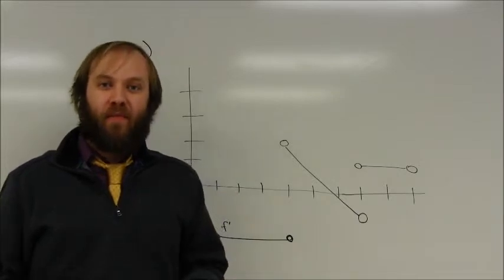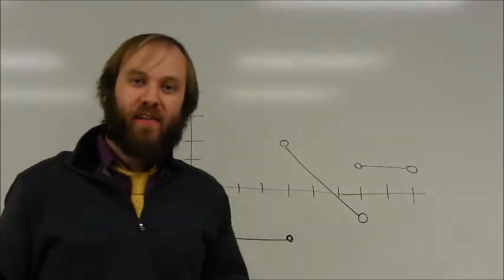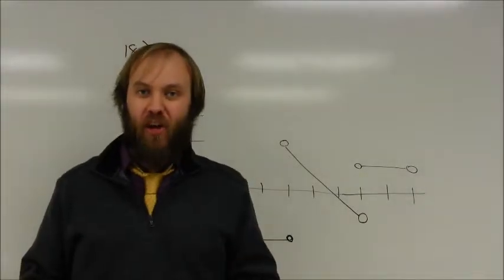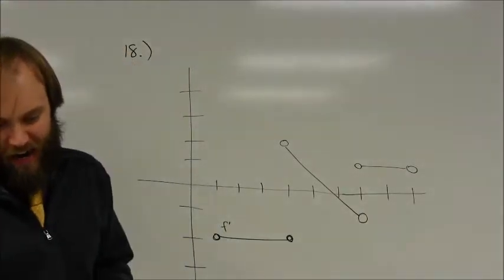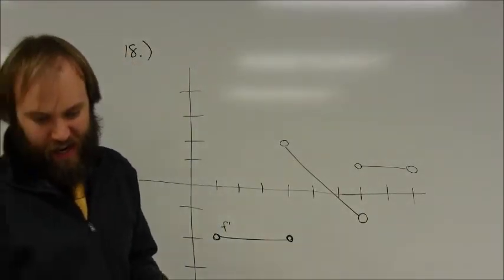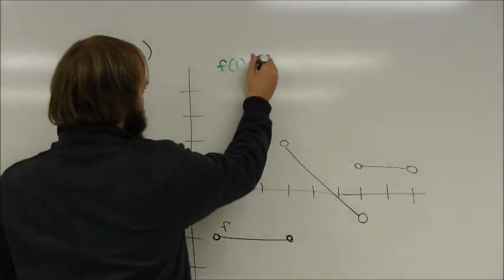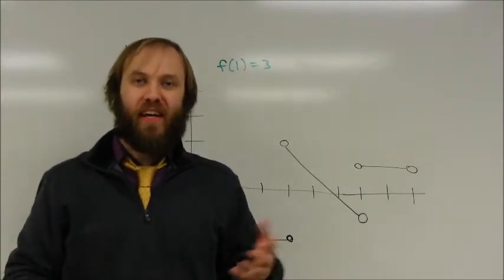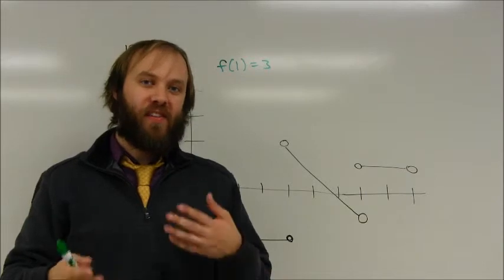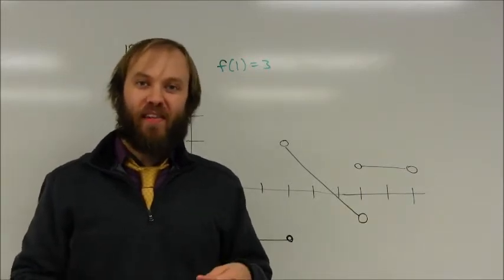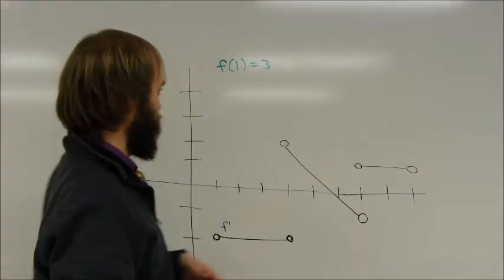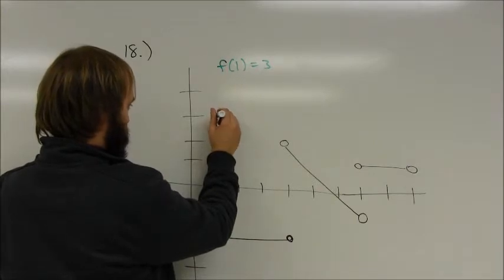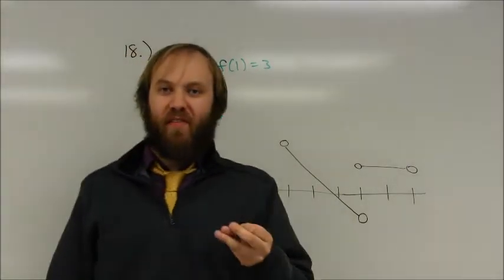This is problem 18 from Forrester's book, section 8.2. Basically, Forrester is asking me to draw the graph of function f using the graph of f prime. In addition to that, he tells me that f of 1 is equal to 3. Remember, when you take the anti-derivative you normally get a plus c — we don't actually know what constant values may have been involved in the original equation. So all we can see is what the slopes would look like, unless we're told a point the graph has to pass through. So the graph has to pass through the point (1, 3).